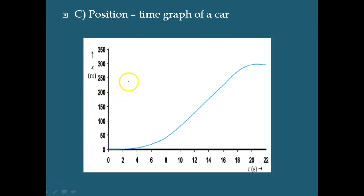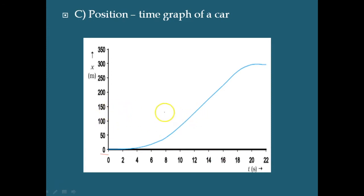Now let us consider the motion of a car that starts from origin O at time t equal to 0. It picks up speed till t equal to 10 seconds — so it is a bit slow in the beginning up to 10 seconds. Thereafter, it moves with a uniform speed till t equal to 18 seconds. From 10 to 12 seconds, in 2 seconds it covers 50 meters, and from 14 to 16 seconds it covers 15 more meters — equal distances in equal intervals of time.